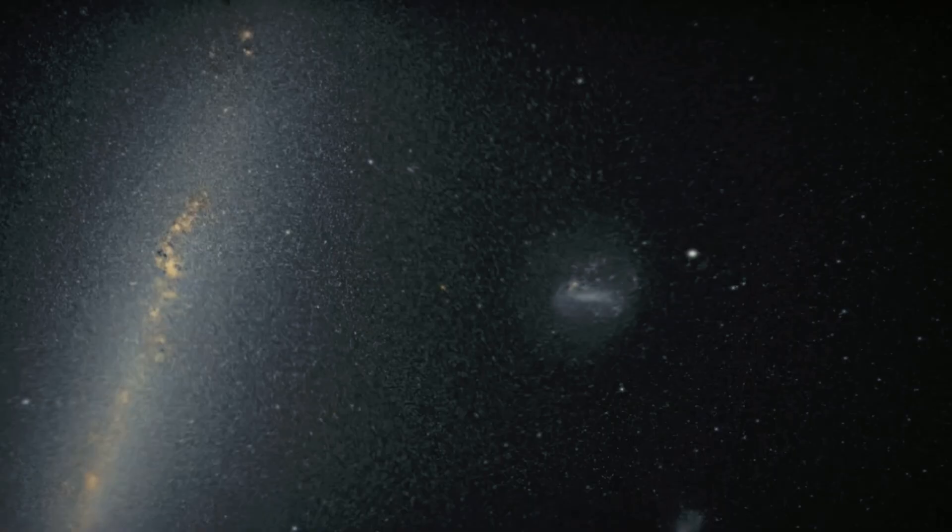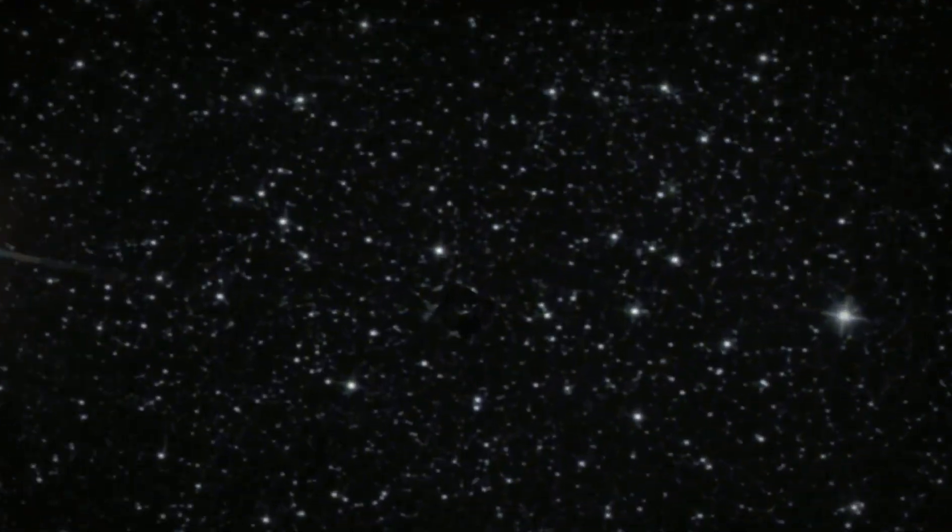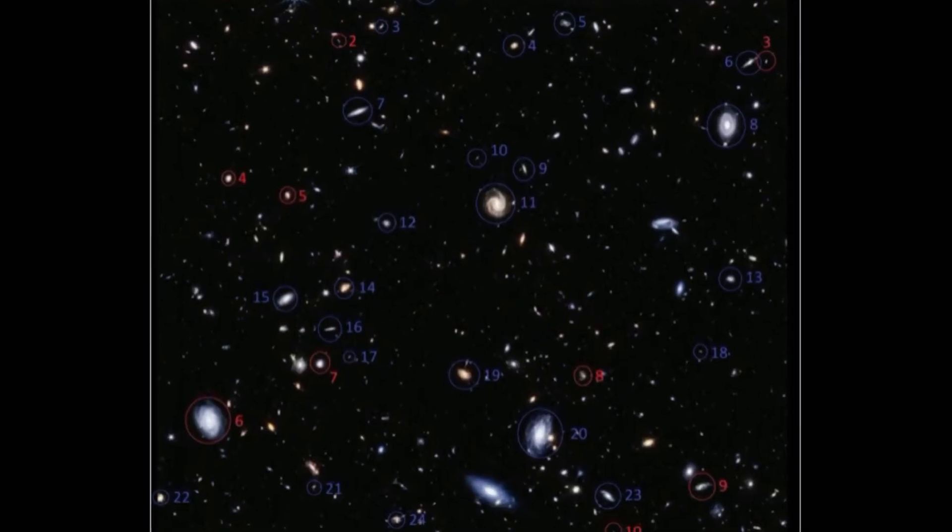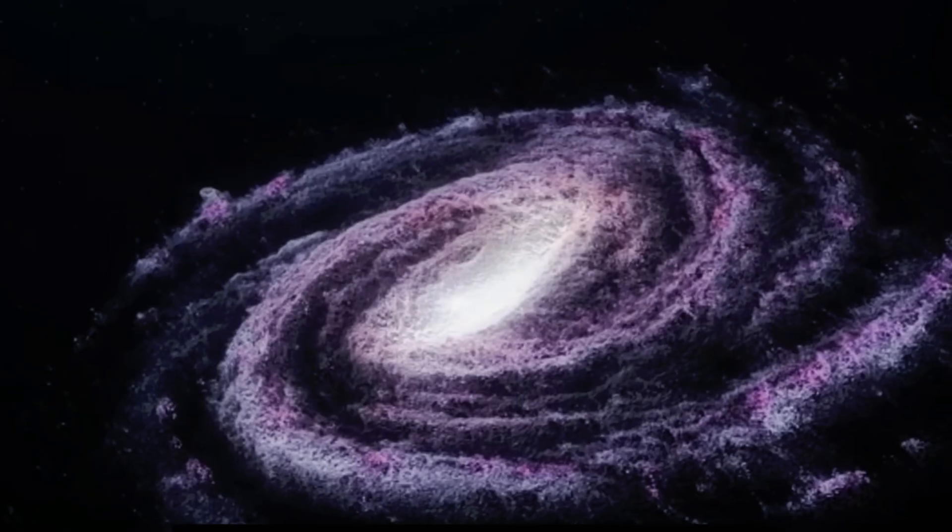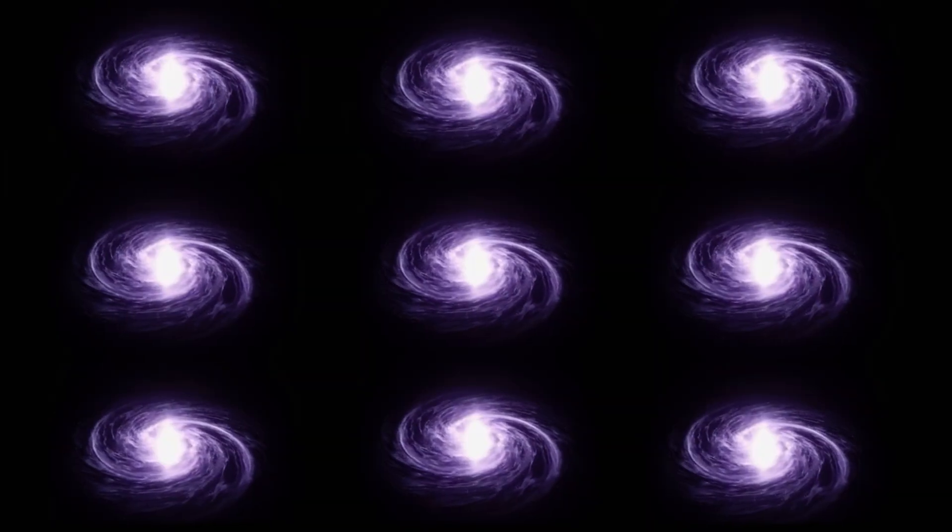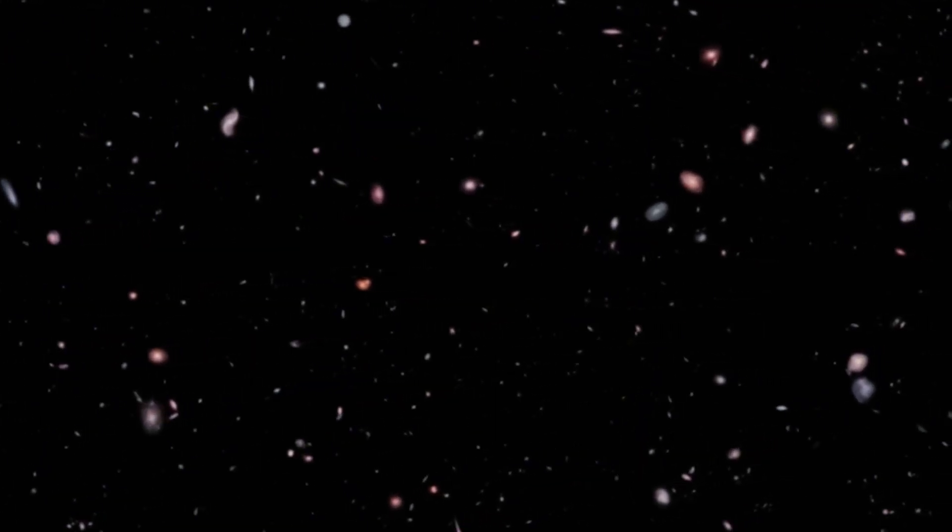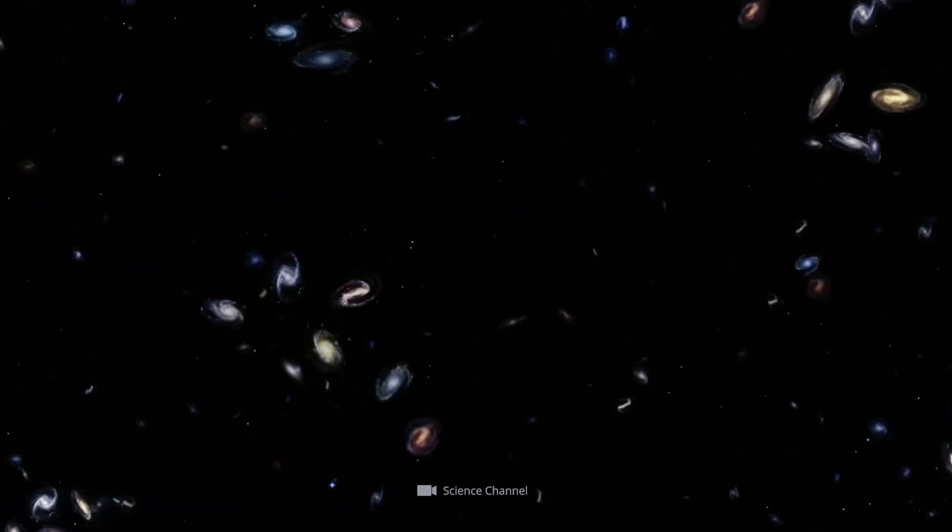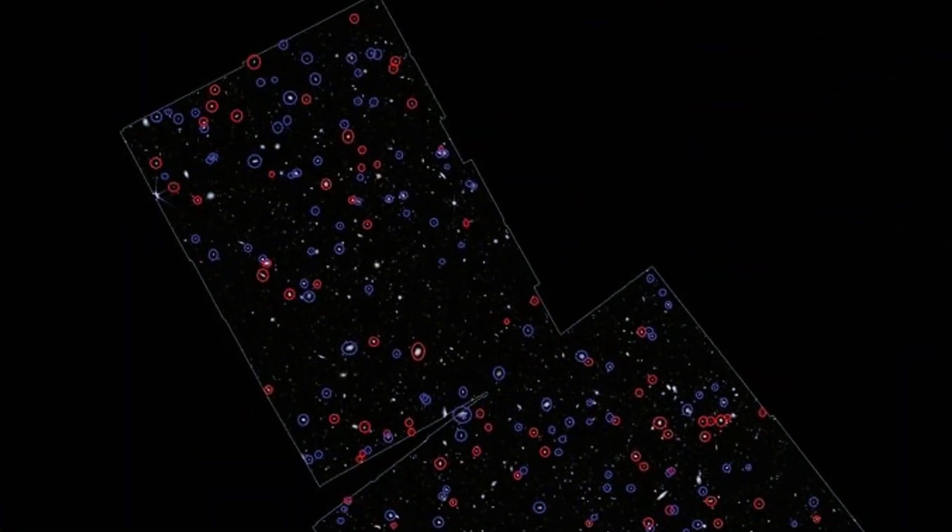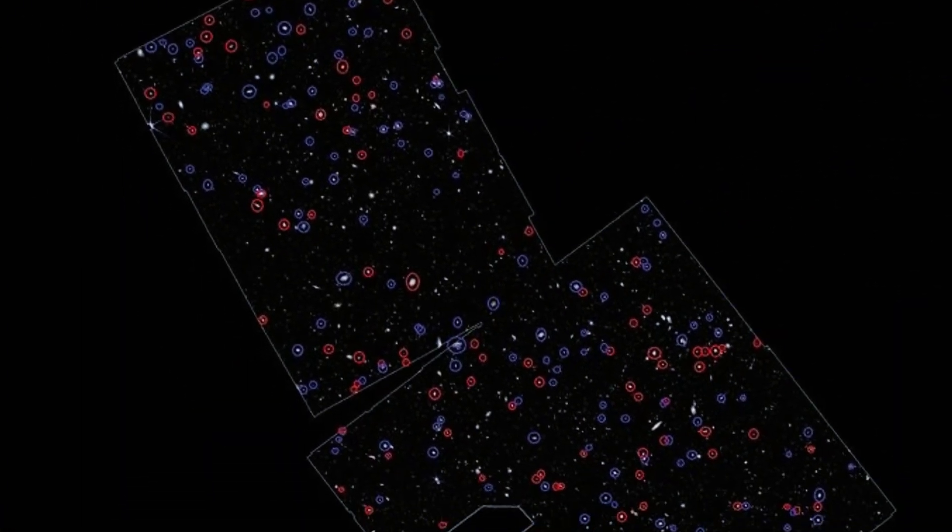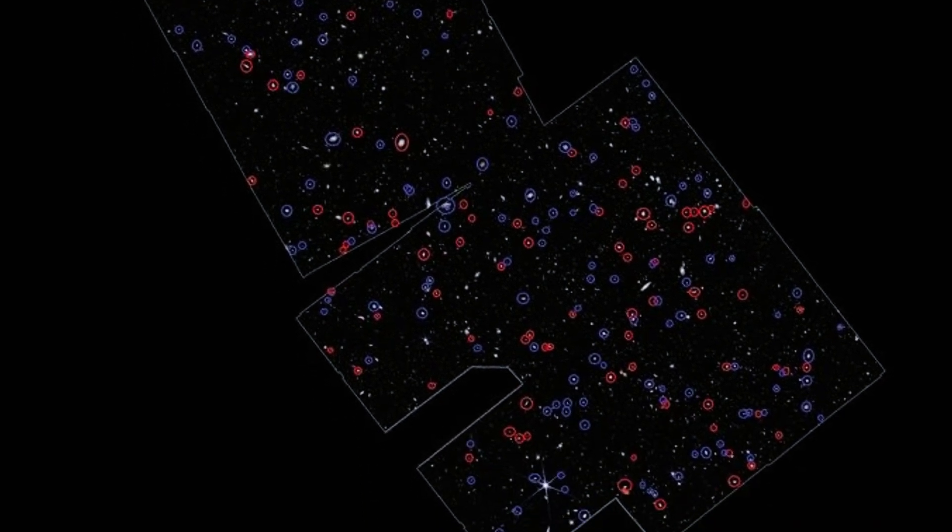The telescope detected hundreds of spiral galaxies, not just randomly scattered, but skewed. Galaxies all spinning predominantly in the same direction. That's not just odd, it's statistically shocking. If the universe were truly isotropic, galaxy spins should be random. Instead, over 50% of the observed galaxies are rotating the same way across vast regions of space.